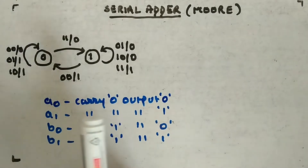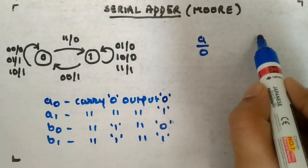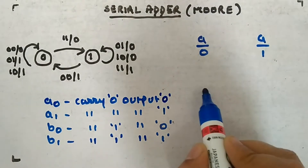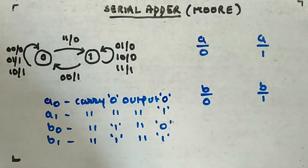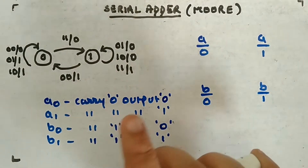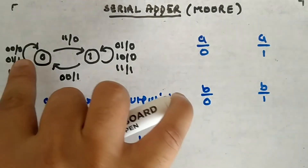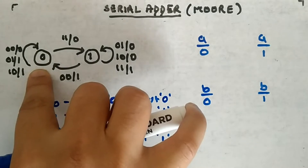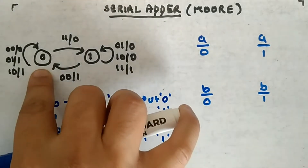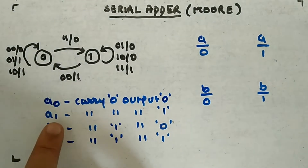So how many outputs will we be having? We are having A0, A1, B0, and B1. The reason I'm doing this is because the output is not dependent upon the input — it is dependent only on the present state. So we have different outputs: carry zero with output zero, and carry zero with output one. They are both different, so I've written A0 and A1.